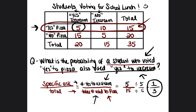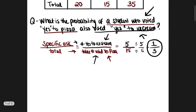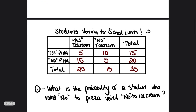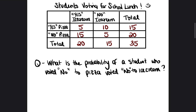We have three more problems just like this to continue strengthening our skills. Some people will be satisfied with that answer, but stick around so we can get you feeling 100% ready when you take your test. We're going to use the same chart but with a slightly different question: what is the probability of a student who voted no to pizza and no to ice cream?